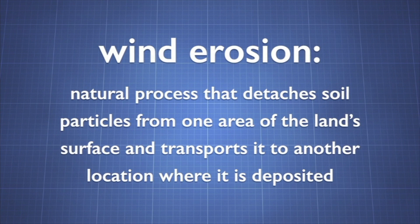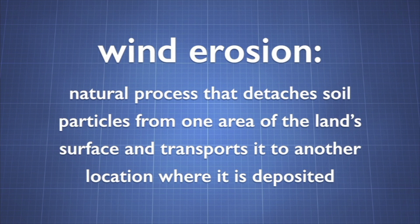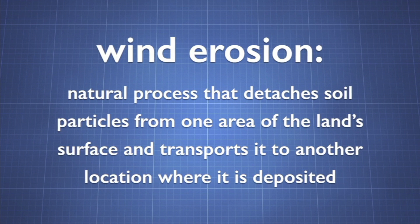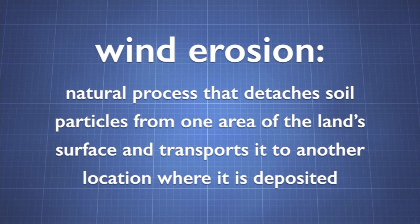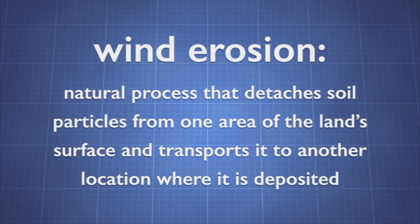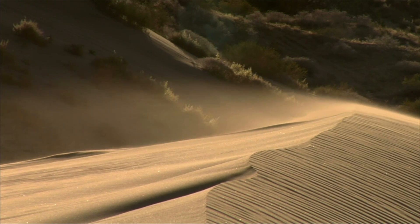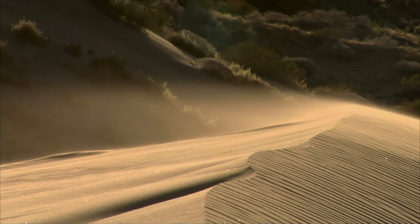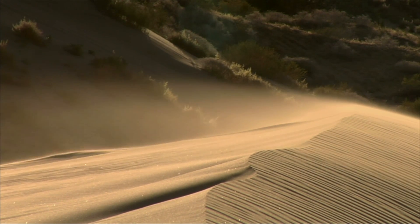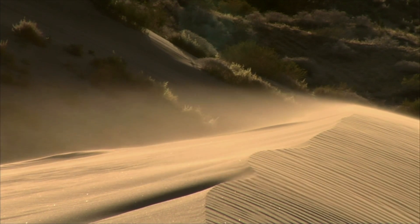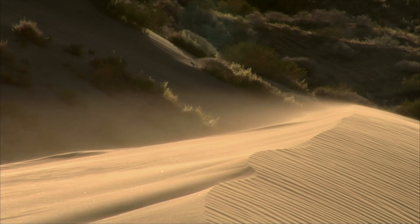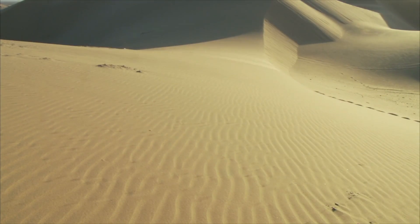Wind erosion is a natural process that detaches soil particles from one area of the land surface and transports them to another location where they are deposited. Air movement results in winds that are strong enough to transport particles of soil and sand. Wind erosion can move only small particles.